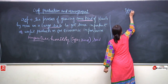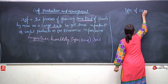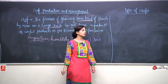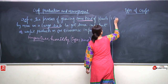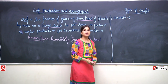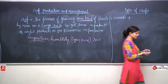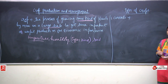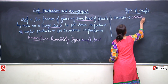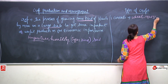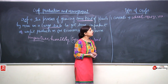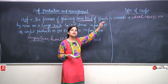When I talk about types of crops, first I would like to talk about cereals. What are cereals? We all know the food grains. Wheat, maize, rice, bajra, jowar — all these come under the category of cereals.